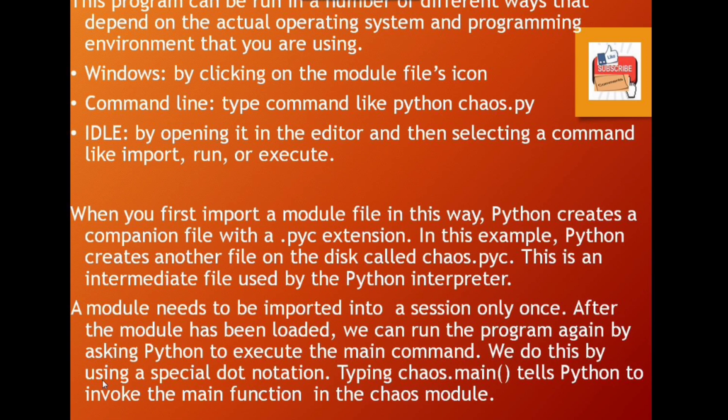We do this by using the special dot notation. Typing chaos.main tells Python to invoke the main function in the chaos module.